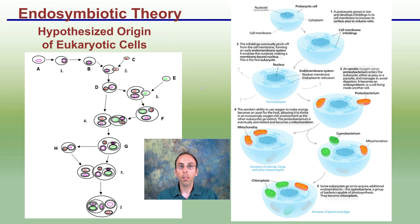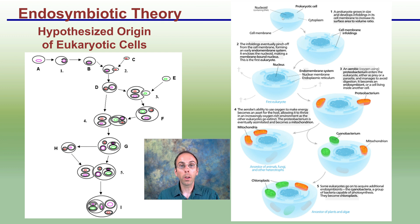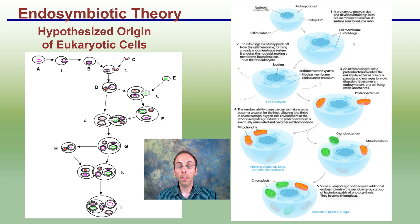How do we get cells that have membrane-bound organelles? We have a prokaryotic cell and there's a potential that cell membrane infoldings could have occurred. These infoldings can create little pockets and these ultimately could have led to the development and specialization of different organelles.